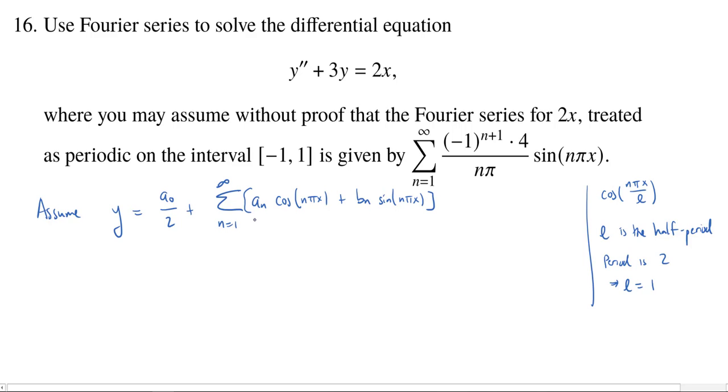And then we also will have our bₙ's times the sine of nπx. So, that's what we would normally assume. However, we know that the Fourier series for 2x does not have a constant term, and it also is just a Fourier sine series. There's no cosine terms. Now, that by itself is not enough to conclude that our y is of that same form. However, the form of the differential equation does tell us that.